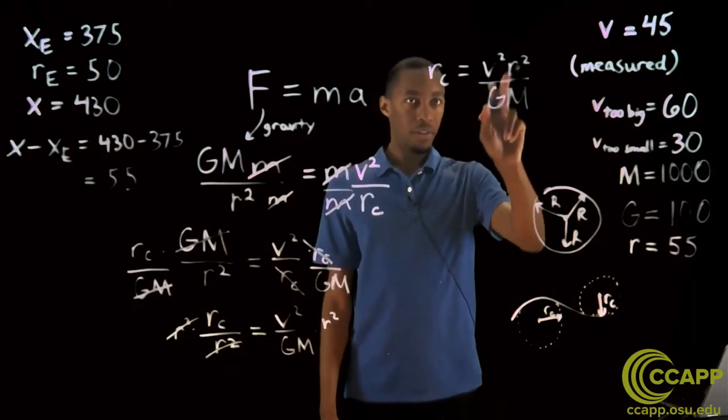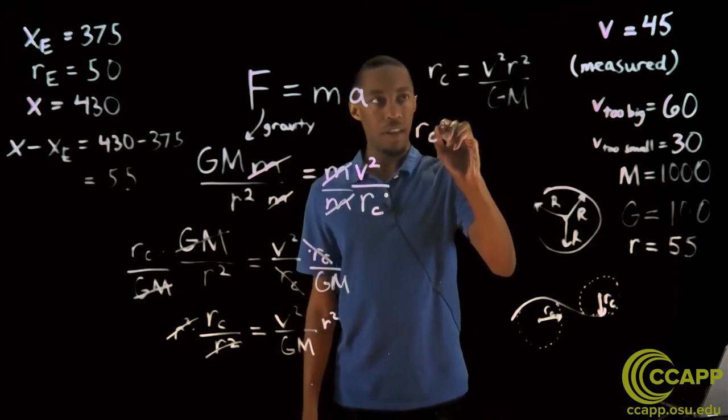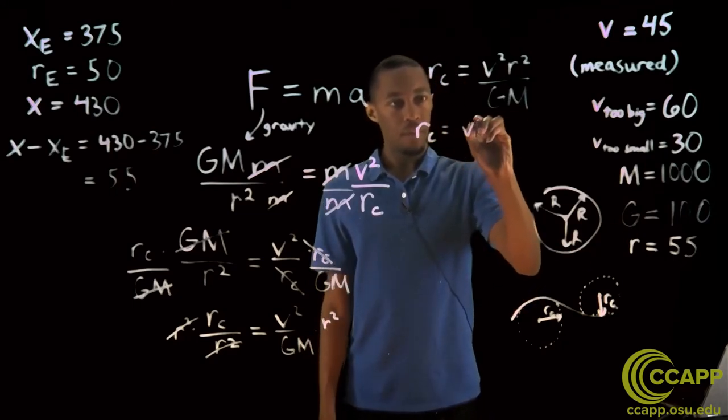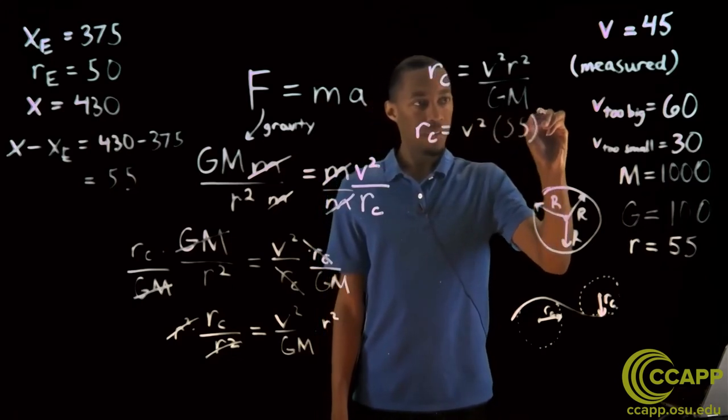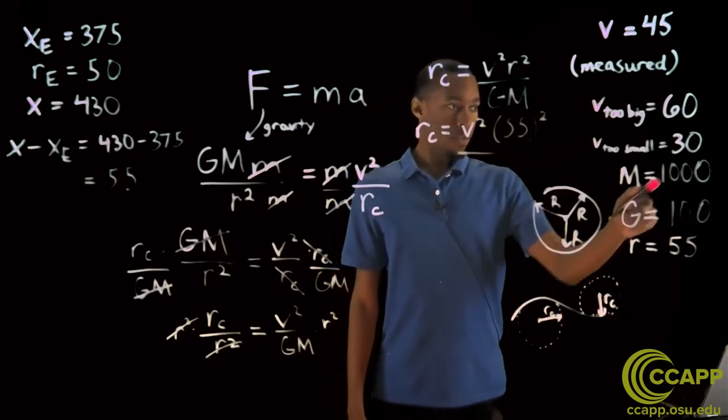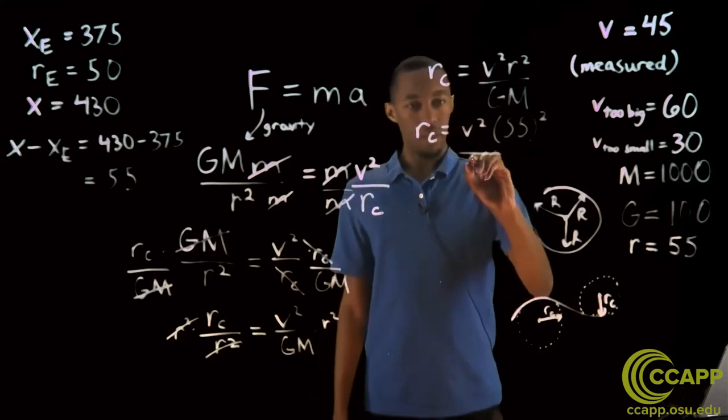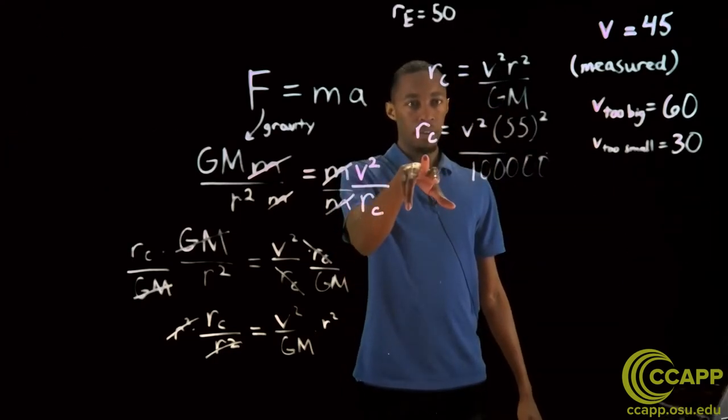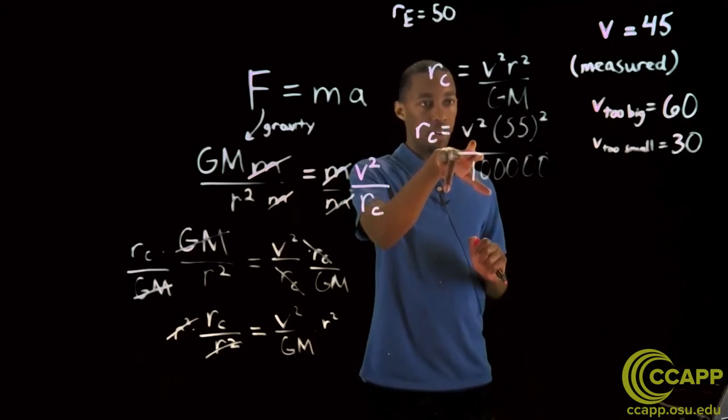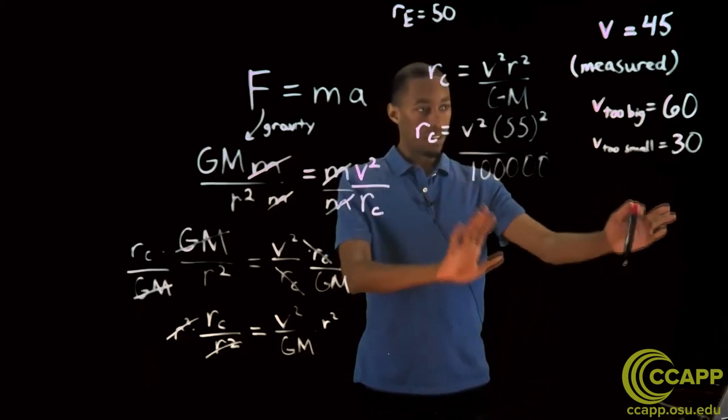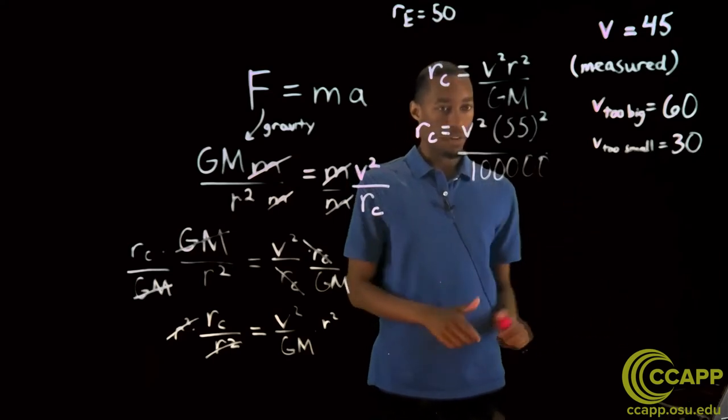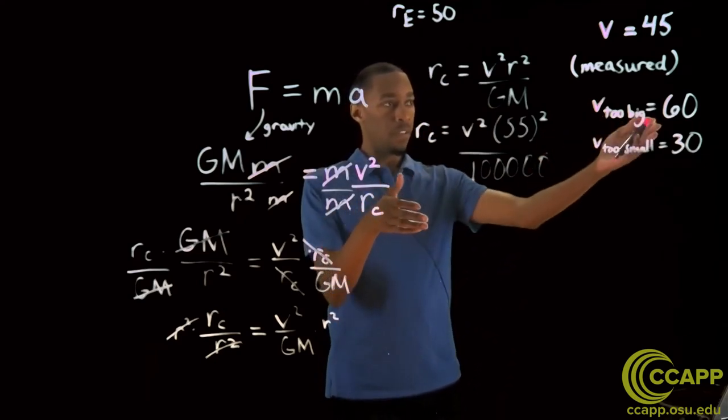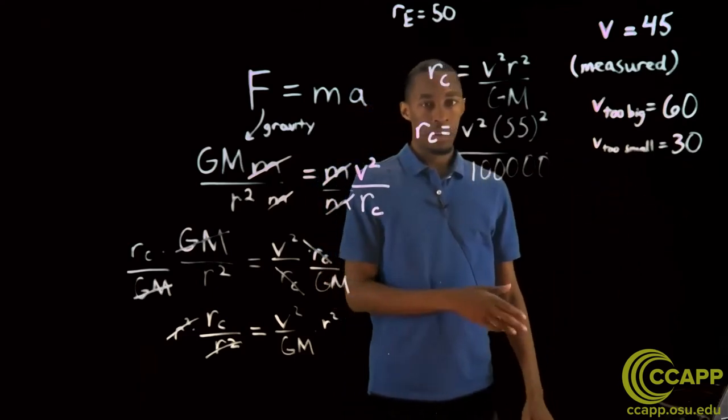So this r that we care about here is actually going to be 55. Now all of these are known quantities. So R sub c equals, I'm going to leave out the v squared for now, we're going to say v squared times 55 squared over 1,000 times 100, which is 100,000. Now we have an equation that relates the radius of curvature of your orbit to the velocity that the object in orbit is moving at. This will help us understand why v of 60 is too big and why v of 30 is too small.